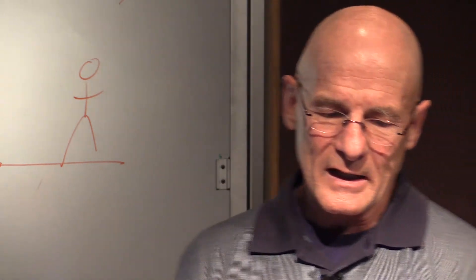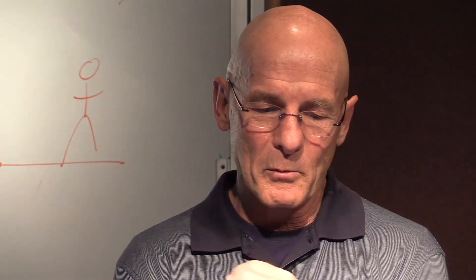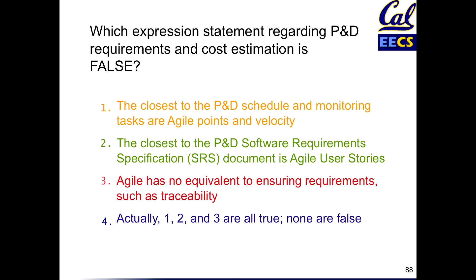Which expression regarding plan-and-document requirements and cost estimation is false? Option A: the closest plan-and-document equivalent to scheduling and monitoring tasks is Agile points and velocity. Option B: the closest to the SRS document is Agile user stories. Option C: Agile has no equivalent to ensuring requirements such as traceability. Option D: actually, they're all true — none of them are false. Why don't you pause and think about that one.